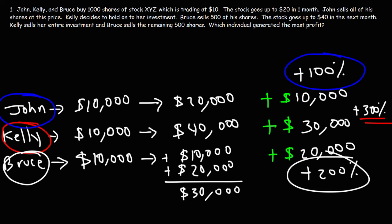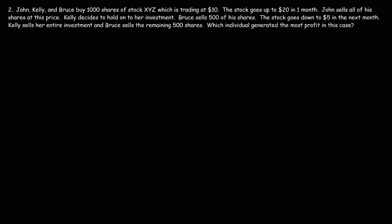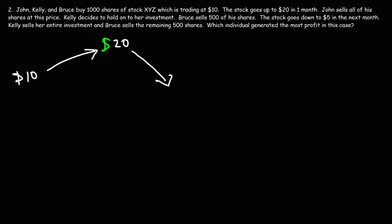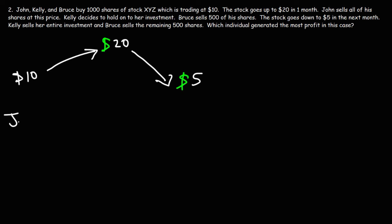Now let's see what happens if the stock goes down instead of going up — this leads to the second problem. The price starts at $10, goes up to $20 just like before. The only difference is that instead of going up to $40, it drops down to $5. Let's see the profits generated by each individual. The initial investment for all three is still the same — they bought 1,000 shares of stock XYZ at $10.